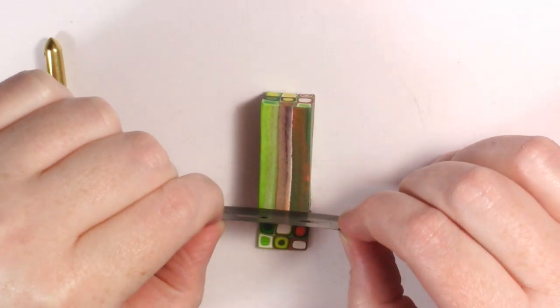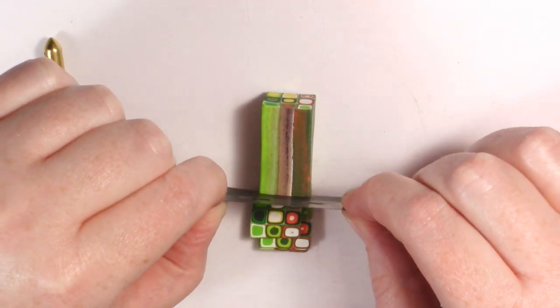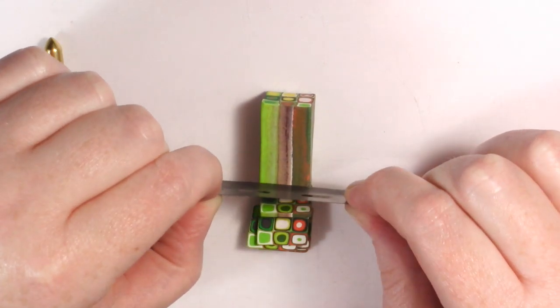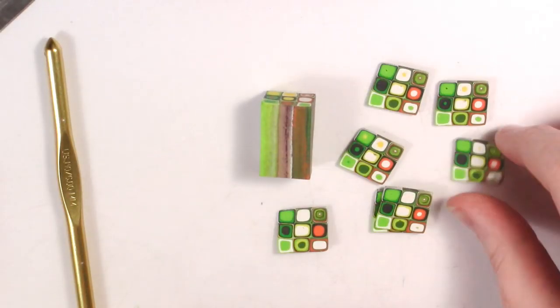Take your cane and start cutting off thin slices. You don't want it paper thin though because you'll be rolling it out to fuse all the slices together. You want enough slices to cover the hook's handle.